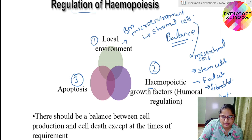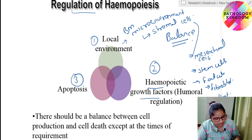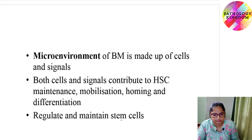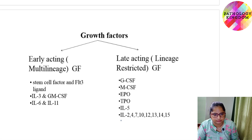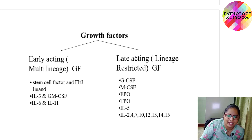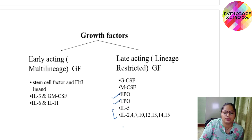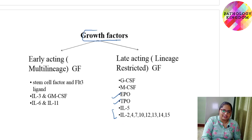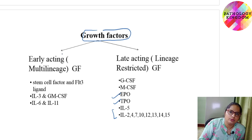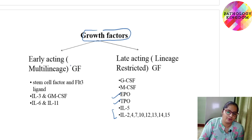Hematopoietic growth factors are divided into early acting and late acting. Early acting factors include stem cell factor, interleukin-3, and interleukin-6. Late acting factors include granulocyte colony stimulating factor, macrophage colony stimulating factor, erythropoietin, thrombopoietin, and various interleukins. These growth factors help in the regulation of hematopoiesis and blood cell formation.